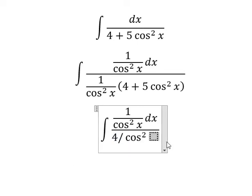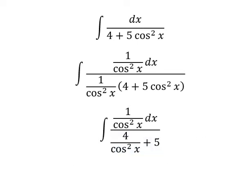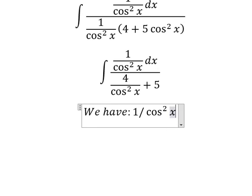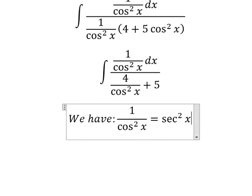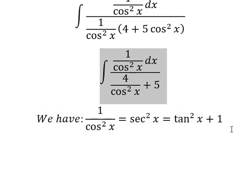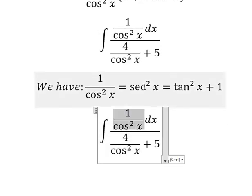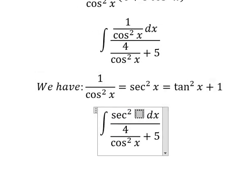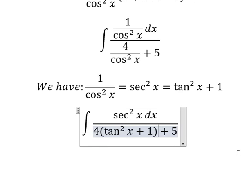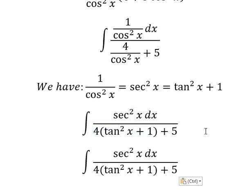Next we have the formula. For this one we change by secant of x square, this one we change by tan x square plus one. And now four multiply by this one and this one.